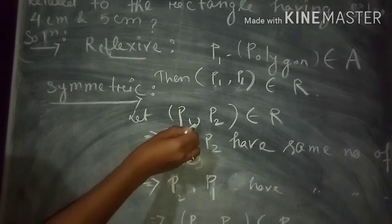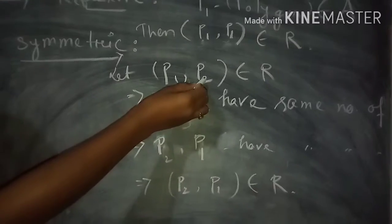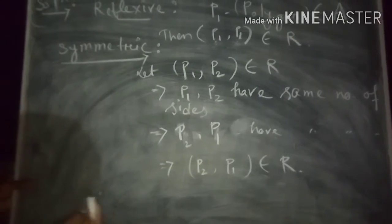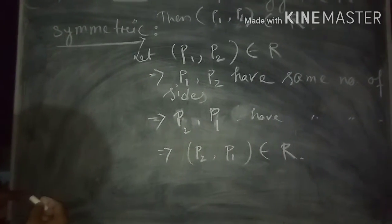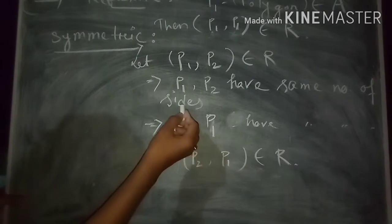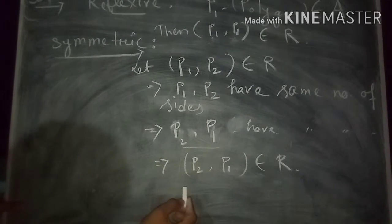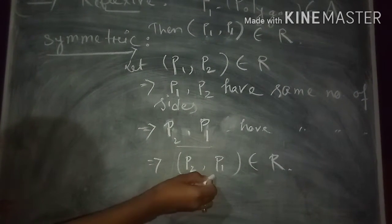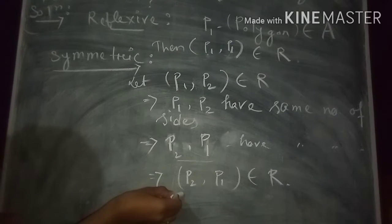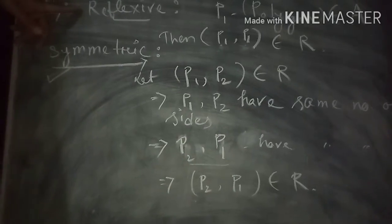For symmetry, let (P1, P2) belong to R, meaning P1 and P2 have the same number of sides. We can equivalently say P2 and P1 have the same number of sides, which implies (P2, P1) belongs to R. Therefore R is symmetric.